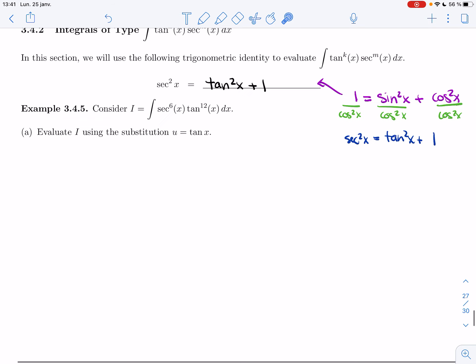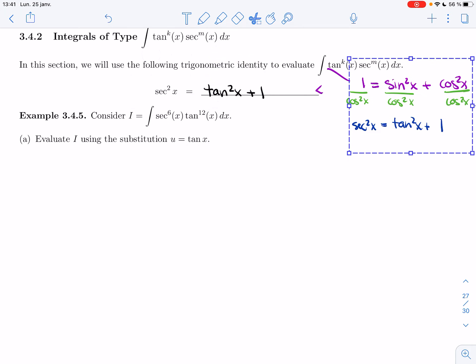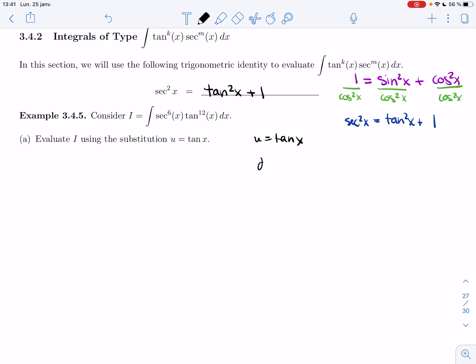So I'll do the same thing I did for sine and cosine. I'll do examples. I'll tell you which substitution to use, but I want you to learn from this example when to use which substitution. So consider the integral of secant to the 6, tan to the 12. Evaluate I by using the substitution u equals tan. I'm gonna take u equals tan of x so that du is secant squared of x dx, or dx will be replaced by 1 over secant squared du.